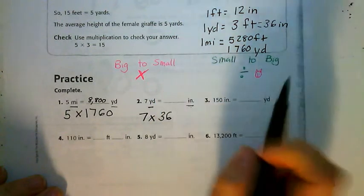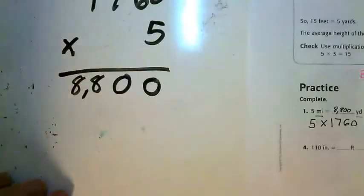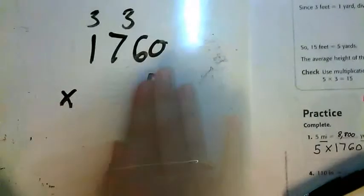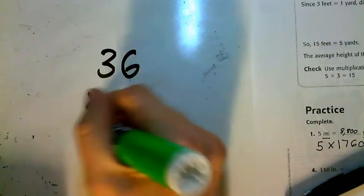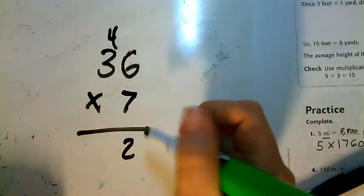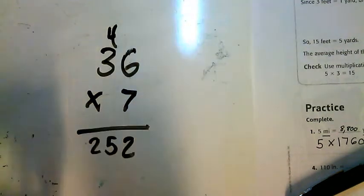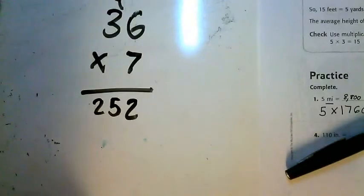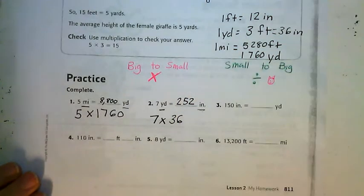So I'm gonna head over here, erase that. All right, so I've got 36 times 7. 7 times 6 is 42, carry that 4. 7 times 3 is 21 plus 4 is 25. So the answer is 252. So 7 yards is equivalent to 252 inches.